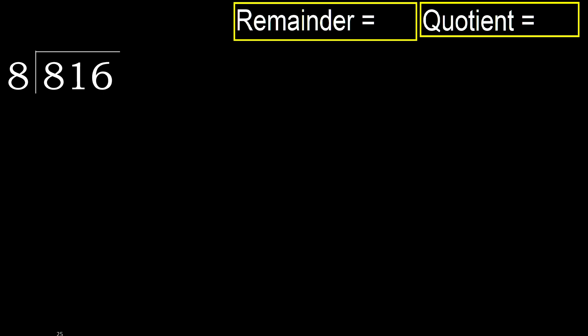816 divided by 8. 8 is not less, therefore start with 8. 8 multiplied by which number is nearest to 8 but not greater? 8 multiplied by 2 is 16 — 16 is greater. Multiplied by 1 is 8. It is not greater, ok.